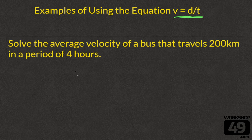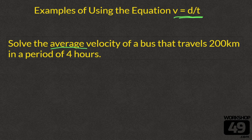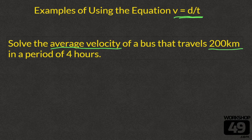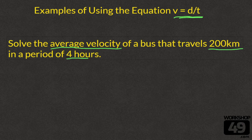As I read the question I'm going to underline the key pieces of information. Solve the average velocity. We have been asked to solve the average velocity, that's the v, of a bus that traveled 200 kilometers, that's the distance that we traveled, in a period of four hours. That gives us the time.